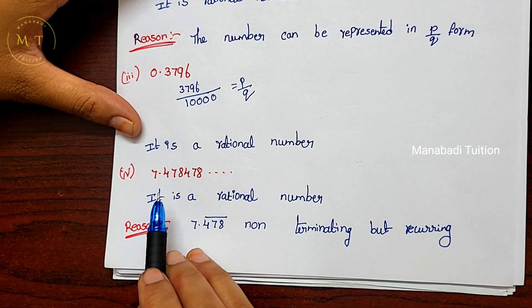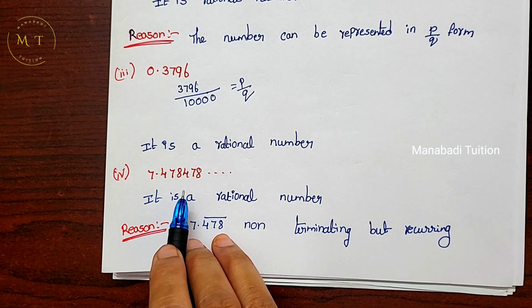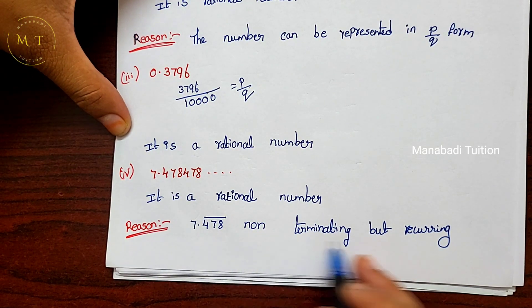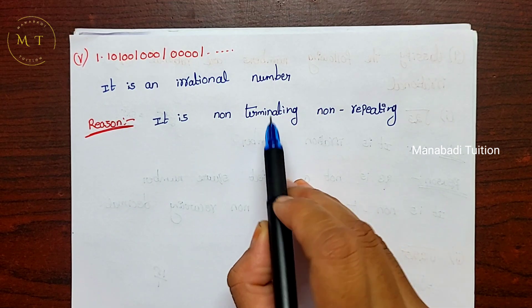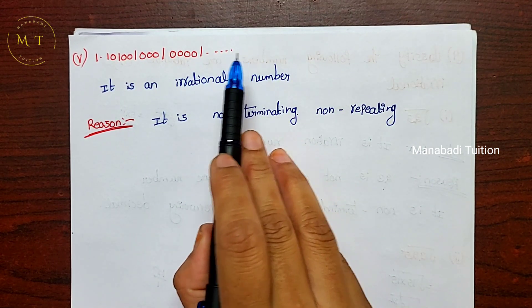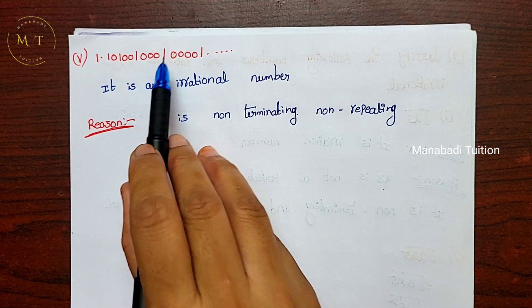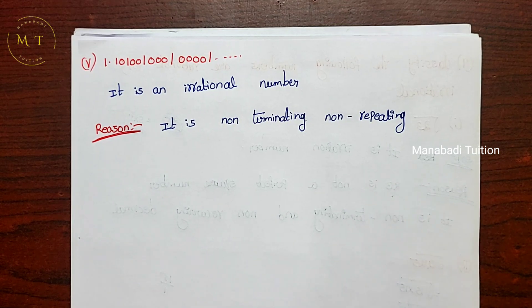This number (0.3796...) does not repeat, so it is non-terminating and non-recurring. Therefore it is an irrational number. That's the solution for Question 9.